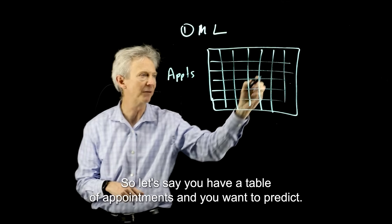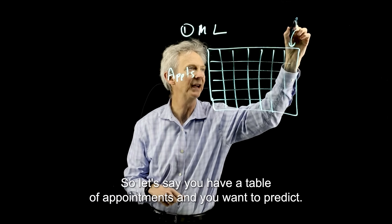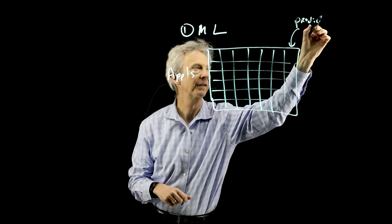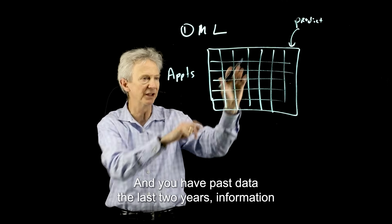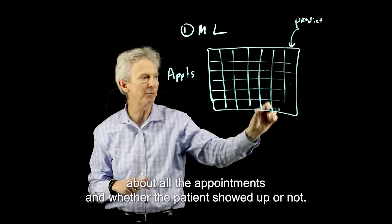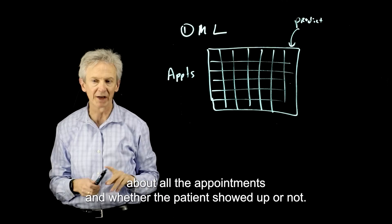Let's say you have a table of appointments, and you want to predict a column like your no-show column. And you have past data, the last two years, information about all the appointments and whether the patient showed up or not.